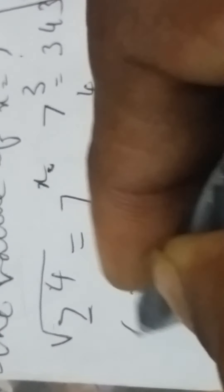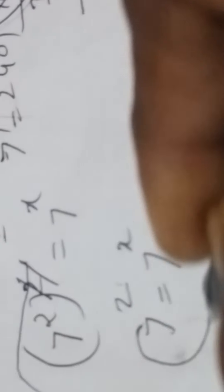Root cancel means 7 square to the power square. So under root, under root square cancel, 7 to the power x. What is remaining? 7 square is equal to 7 to the power of x. If bases are equal, power should get equal. So that implies x is equal to 2.